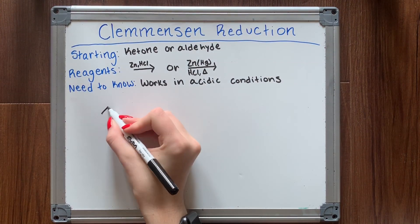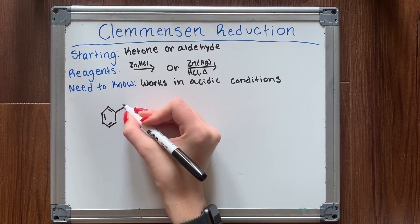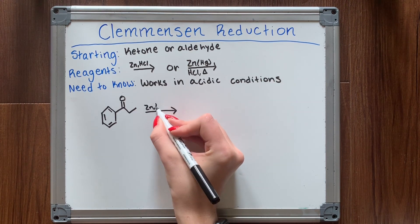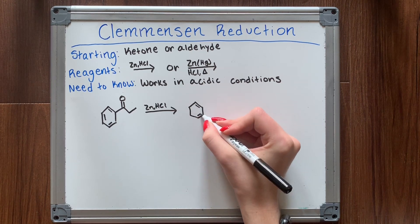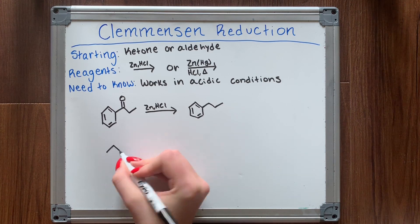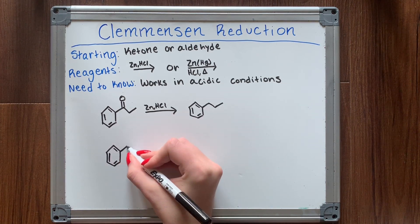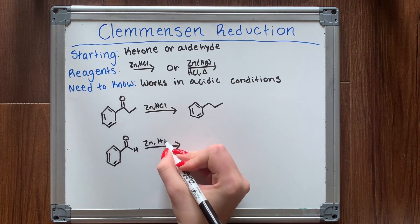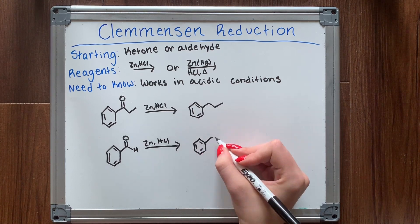The Clemmensen reduction. This is also used frequently in organic chemistry two. The starting material is either a ketone or an aldehyde, and your reagents are written as either zinc and HCl, or zinc and mercury over HCl with heat — it depends on how your professor writes it. This works in acidic conditions, and as you can see it simply pulls the carbonyl group right off, leaving you an alkane. It is a very synthetically useful reaction.